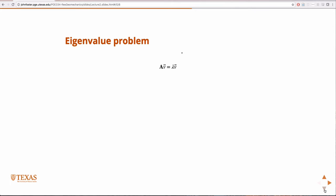Don't worry about where the name comes from. The vector V that satisfies this equation is an eigenvector. The lambda, the constant lambda, is called the eigenvalue.